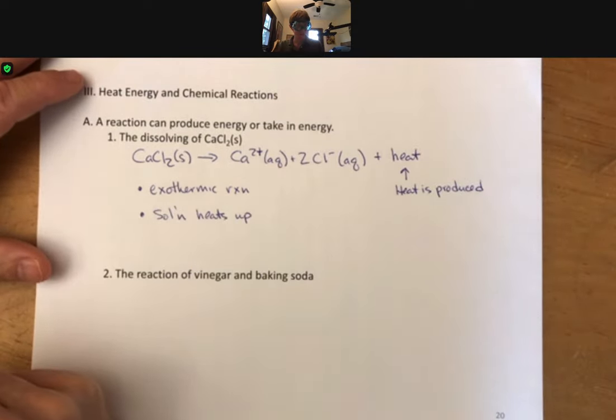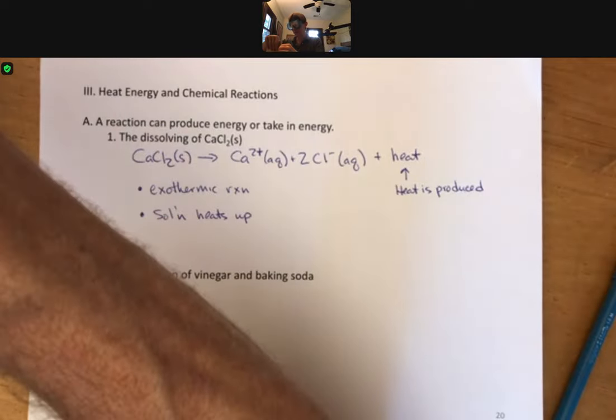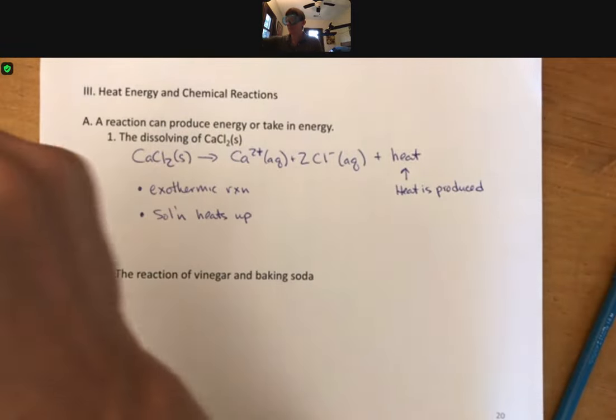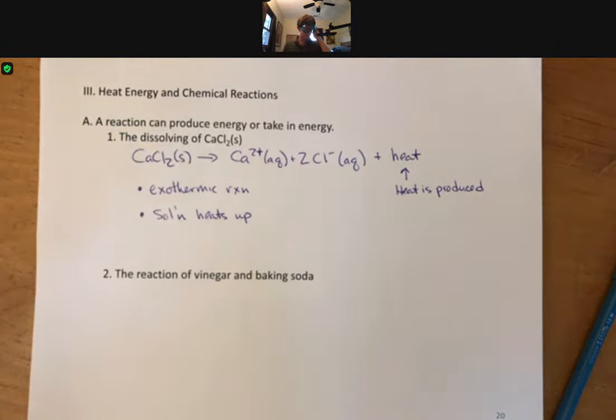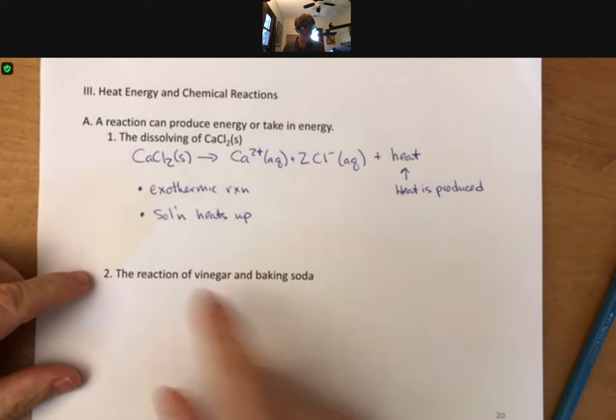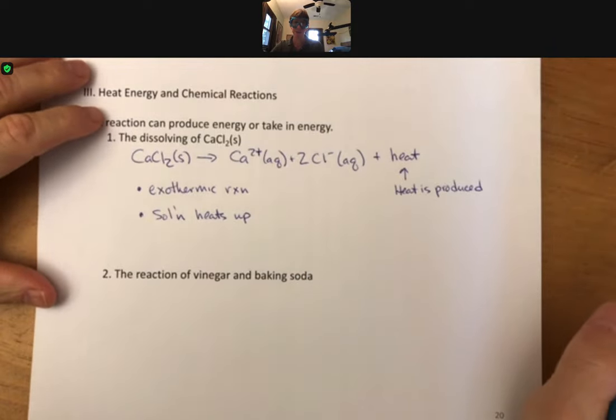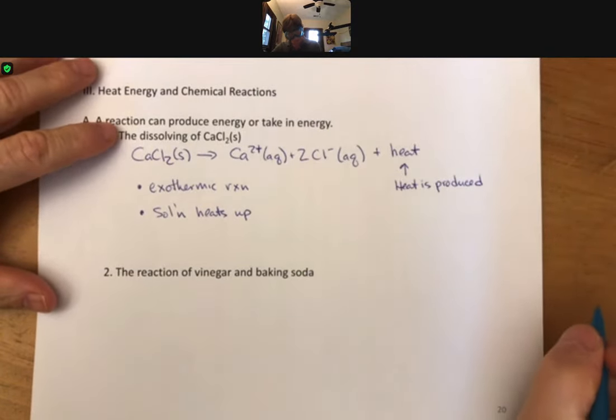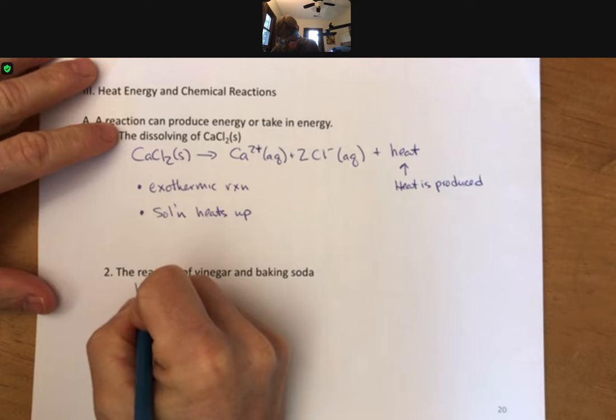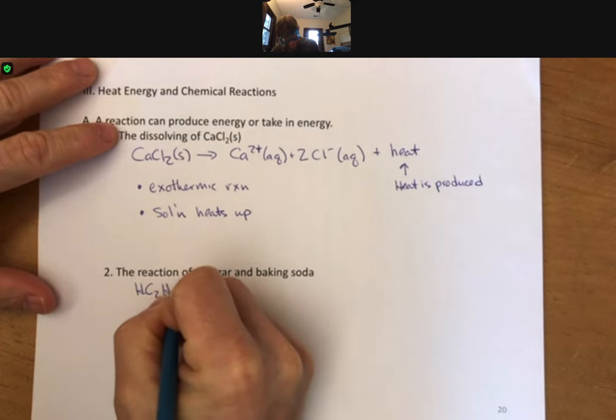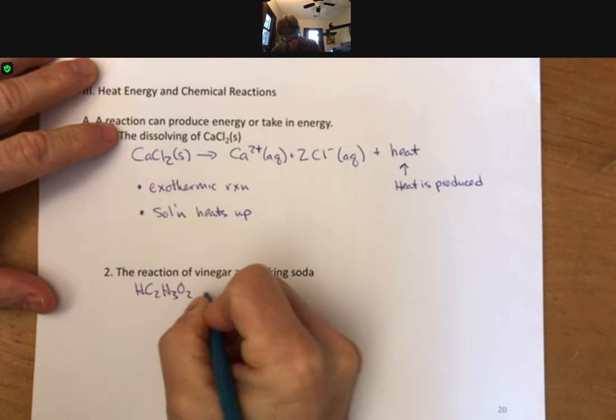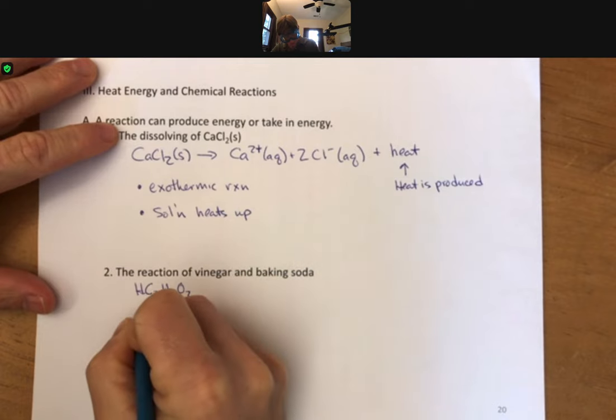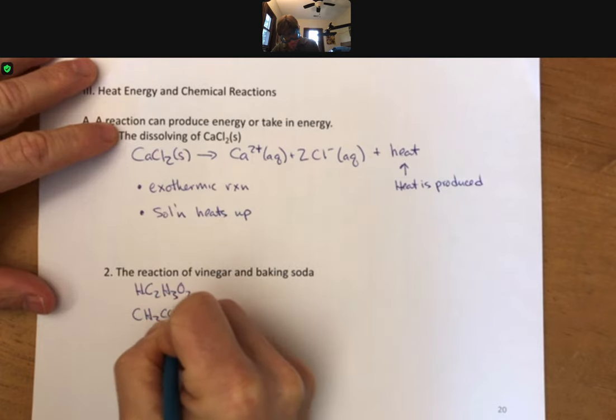Let's go to our second demonstration, all with household chemicals. This one is going to be the reaction of vinegar and baking soda. Vinegar contains acetic acid, and there's two ways that we can write acetic acid: HC2H3O2 or CH3COOH.